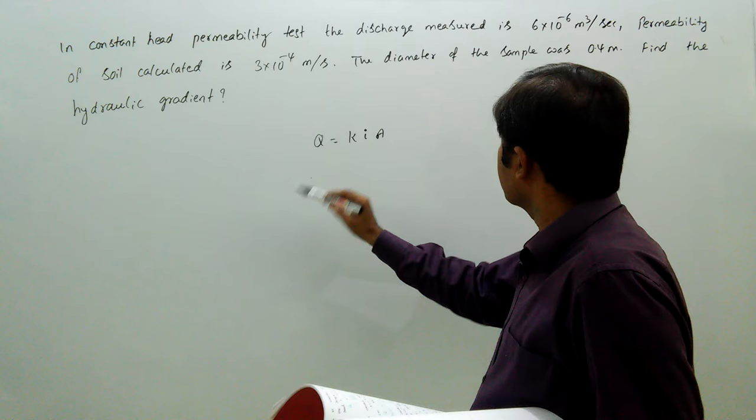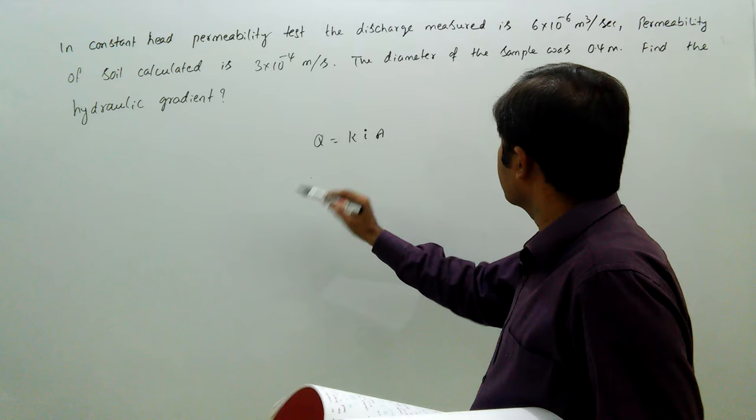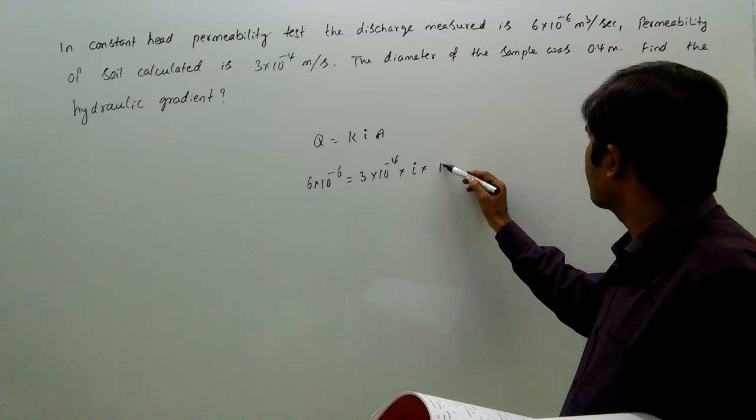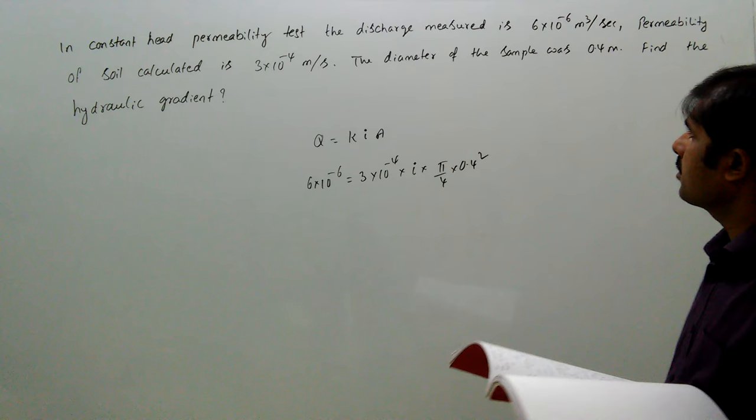So given here Q is 6 into 10 power minus 6, that equals K which is 3 into 10 power minus 4, times i, times area. Area is π by 4 d square, which means 0.4 square.